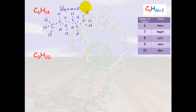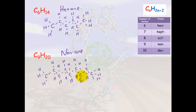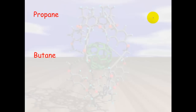The last one here has nine carbons, so it will be non-. We draw those nine carbons again with three hydrogens on each end and two hydrogens on each of the other carbons. At the end, add up your hydrogens to make sure they add up to 20, and double-check that each carbon has four bonds associated with it.